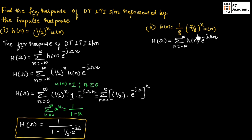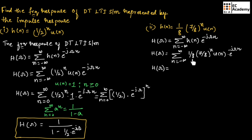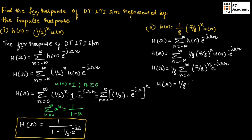In place of H(n), let us substitute this term. So H(ω) equals the summation from n equals minus infinity to infinity of (1/8)(7/8)^n u(n) e^(-jωn). We can take the 1/8 outside the summation since it has no n term, and change the limits to n equals 0 to infinity so that u(n) equals 1. This gives us (1/8) times the summation from n equals 0 to infinity of (7/8 · e^(-jω))^n.